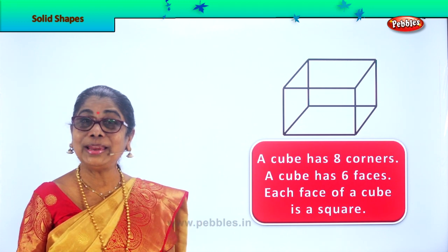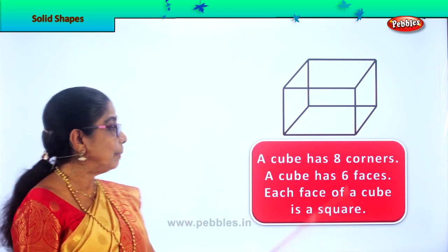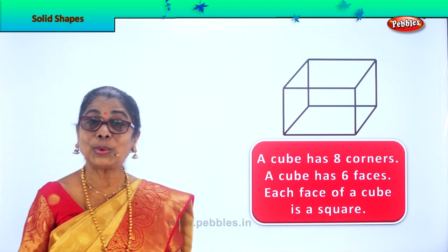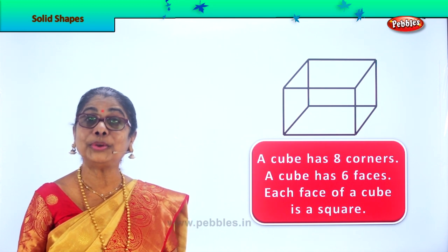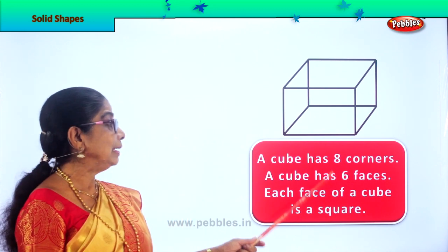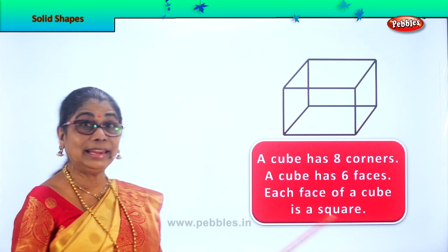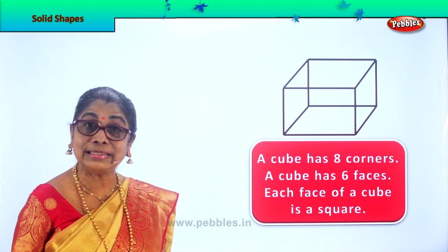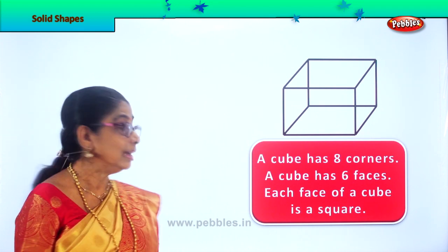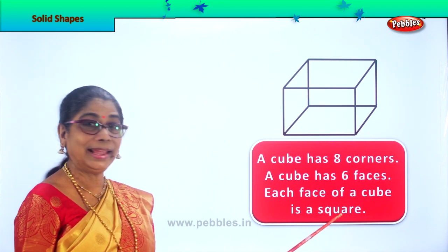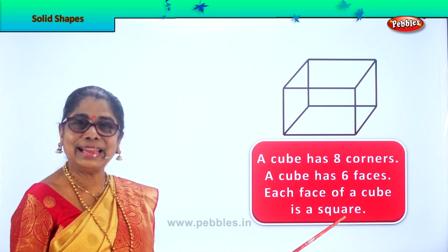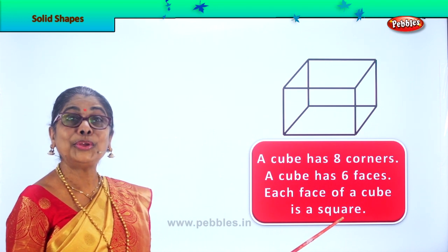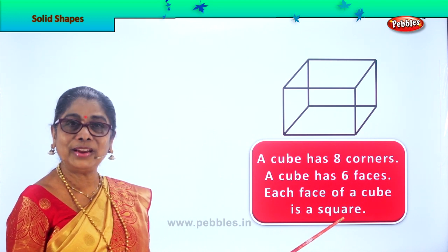Good. So, we learnt today about a cube — the solid figure cube. It has eight corners, six faces, and each face is a square. Did you enjoy learning about a cube? Very good.